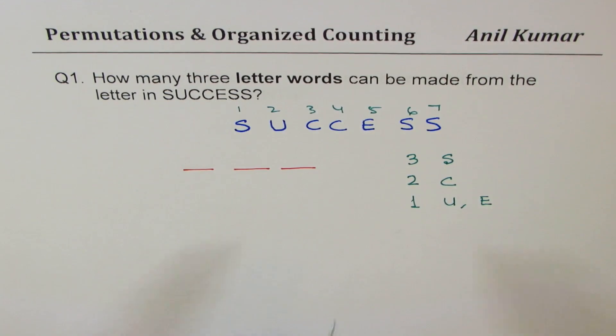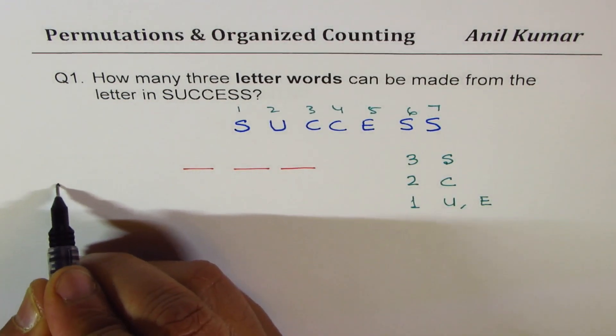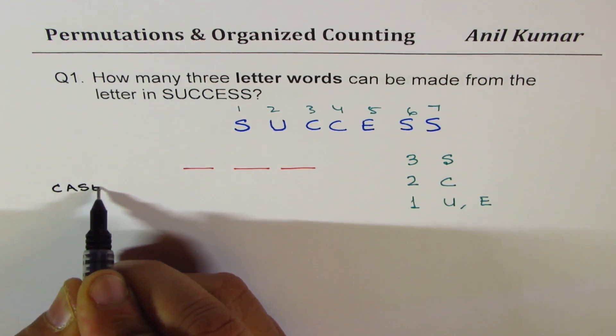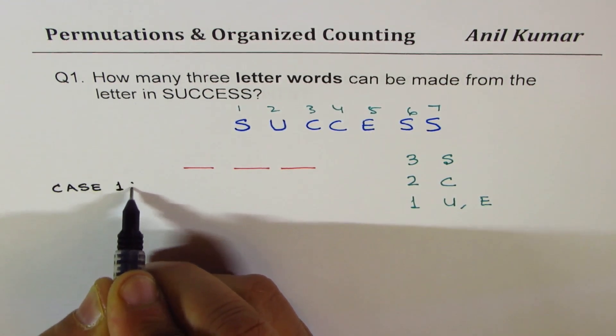Now since you can see some letters can come twice, some can even come three times, in this case we should actually go with cases. So let's see how to organize our cases.